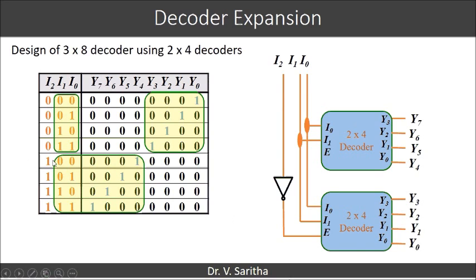Now if you see here, I2 is 1 for the second decoder. So we will connect I2 directly for the enable input of the second decoder. If I2 is 1 here, the outputs of the second decoder, that is Y4 Y5 Y6 Y7, depends upon I1 and I0. This is how the 3x8 decoder is designed using 2x4 decoders.